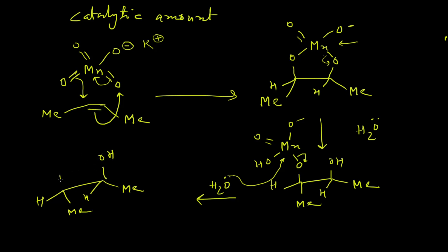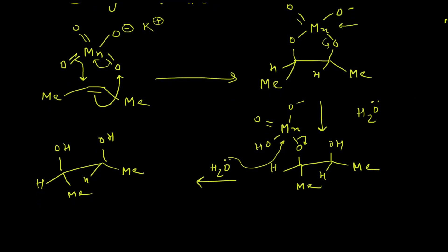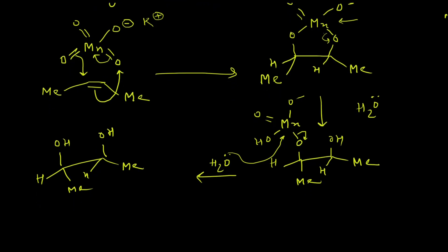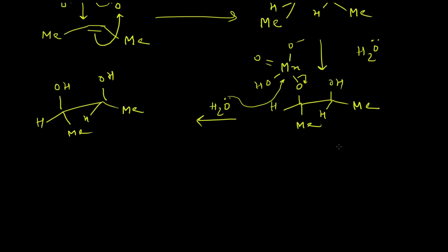First attack will take place in the manganese center, which will lead to the breaking of one manganese-oxygen bond and formation of this intermediate will take place. Then another molecule of water will attack, and the final remaining manganese-oxygen bond will break. As we know, manganese salts are very cheap, so we can use it in a stoichiometric amount.